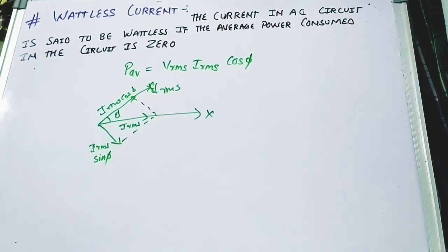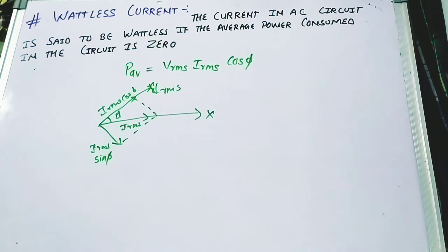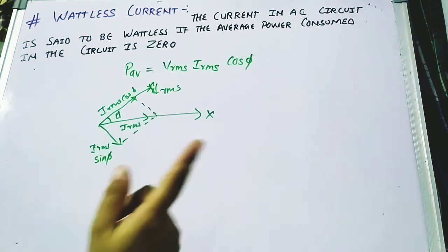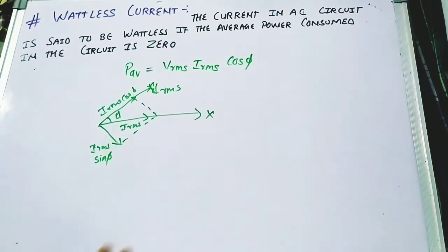Hello students. In this part we are going to learn about wattless current. Wattless means the power or energy over the cycle is equal to zero. The current in an AC circuit is said to be wattless if the average power consumed in the circuit is zero.